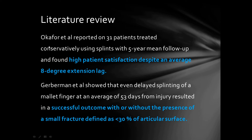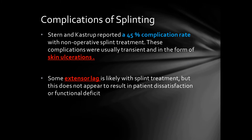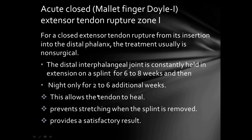Okafor et al. reported on 31 patients treated conservatively with splinting over a five-year mean follow-up and found high patient satisfaction despite an average eight-degree extension lag. Garberman et al. showed that even delayed splinting at an average of 53 days from injury resulted in successful outcomes, with or without small fractures involving less than 30% of articular surface. Complications of splinting are usually transient, including skin ulceration and some extensor lag, which does not appear to cause patient dissatisfaction or functional deficit.